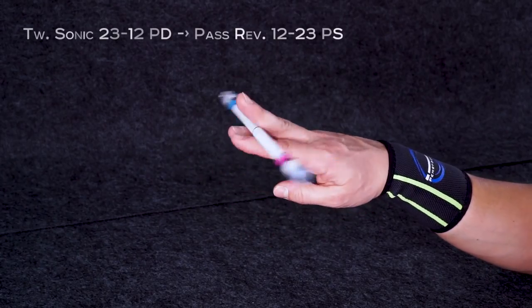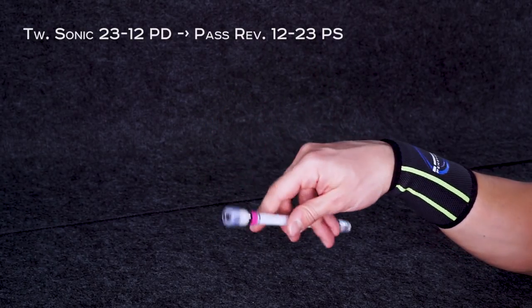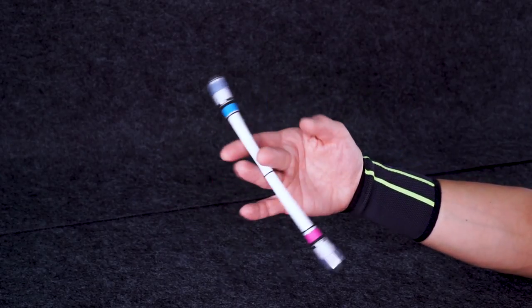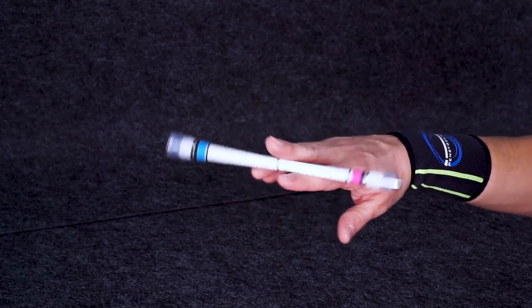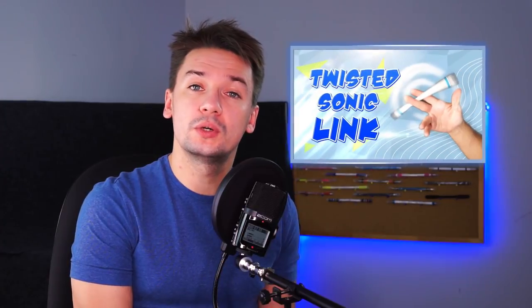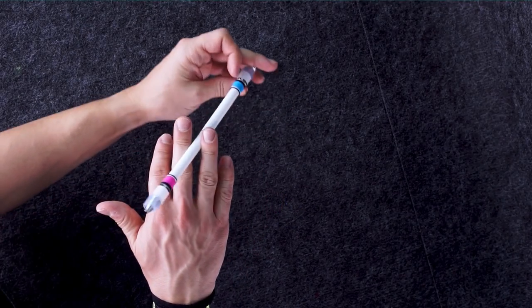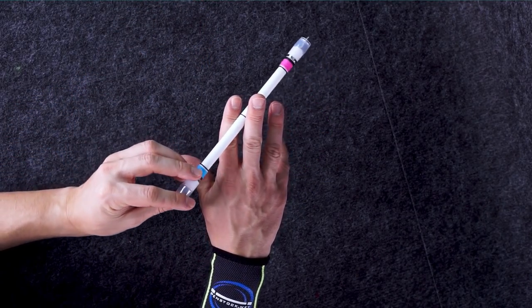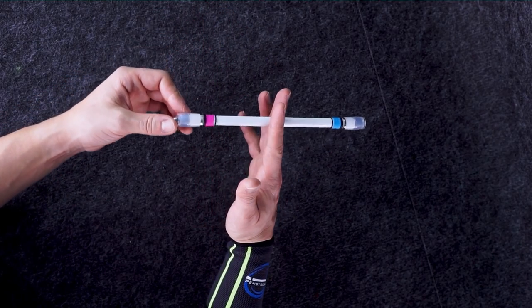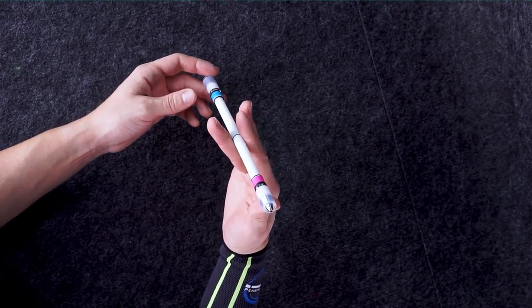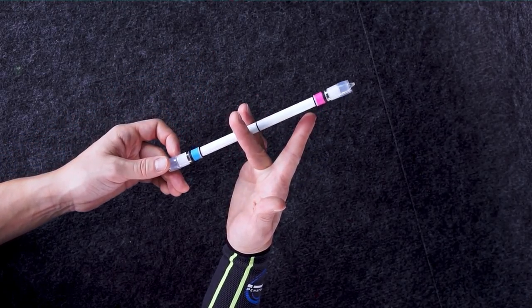Now let's break it down to linkages. The first one is going to be Twisted sonic 2312 palm down to Pass reverse palm side, and it should remind you of the basic link Twisted sonic normal. If you haven't watched the video about this linkage, it is going to give you a good idea of how this one should be done. The very same concept of performing, but with Pass reverse instead of Twisted sonic reverse. First you do Twisted sonic palm down and when the pen changes slots from 23 to 12, you turn the wrist. It follows your pen's movement and when the tip of the pen is close to thumb, raise index and grab the mod in 23.